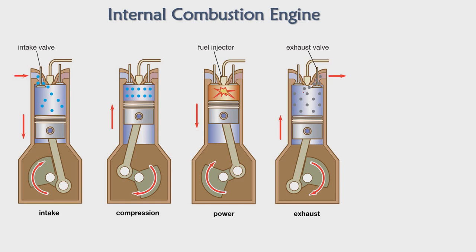Because of combustion, the volume expands in the combustion chamber, pushing the piston back. After this, the piston goes to the top, the exhaust valve opens, and all combustion products escape through the exhaust valve. These are the four main strokes of the internal combustion engine.